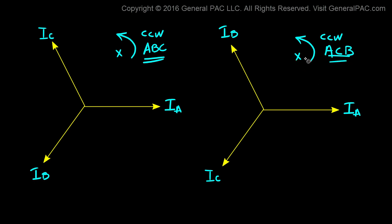So for an ACB system, if we have this stationary mark here, then A is going to cross the stationary mark first, then C, then B. But for an ABC, A is going to cross it, then B is going to cross it, then C is going to cross it.